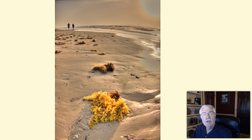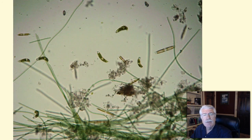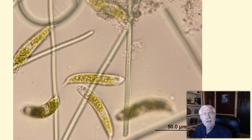Seaweed in the ocean and in estuaries is often confused with an aquatic plant. But seaweed is not a vascular plant — it's really a multicellular algae. There are many forms of algae, some of which are so small that they can only be seen with a microscope. These algae are part of the phytoplankton in freshwater and saltwater.